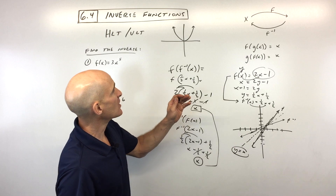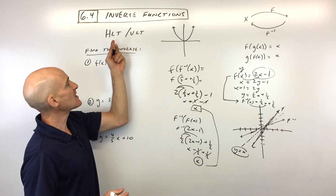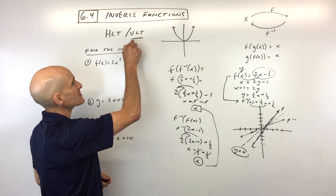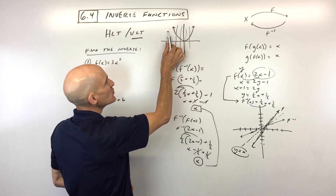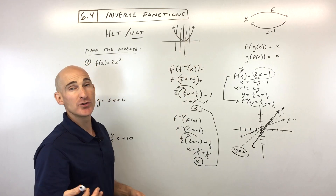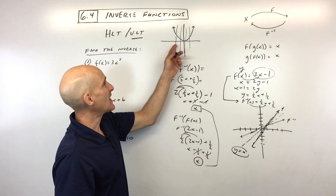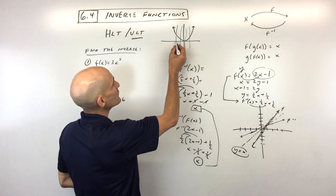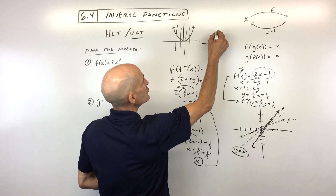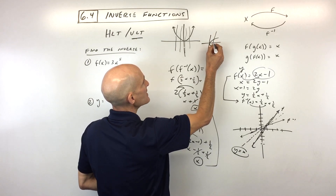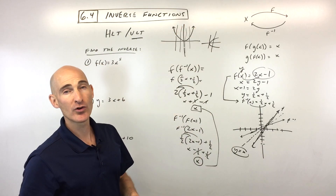The other thing we want to talk about in this lesson is the horizontal line test versus the vertical line test. The vertical line test: you draw vertical lines, and you only want them to cross the graph at most once. If it crosses the graph more than once, that means it's not a function. For every x value, you only want one y value. So if a vertical line crosses at x equals 1 and gives y equals positive 1 and y equals negative 1, that means for one input you have more than one output — that's not a function.